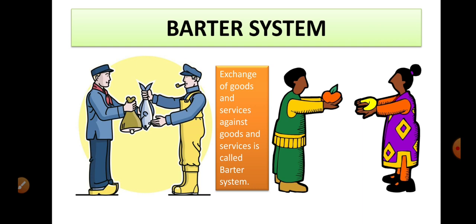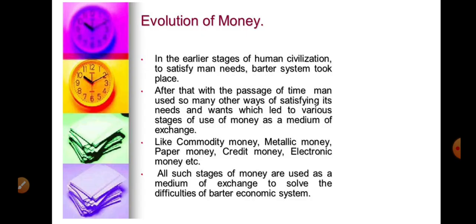Instead of the barter system, we have to use money to do these types of transactions. Money evolved in different forms like metallic money, paper money, credit cards, electronic money, coins, currency notes, and now electronic money is running.